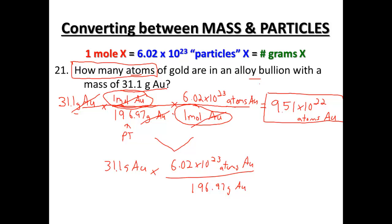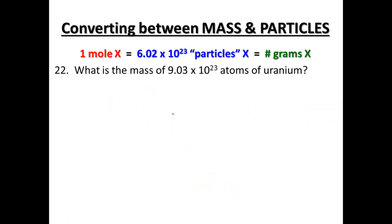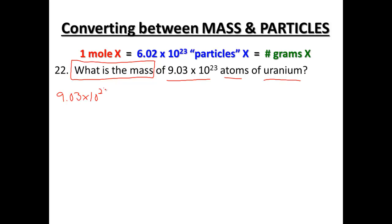Problems 22 and 23 are similar. Try those out, then pause and look at the answers to see if you're on the right track. For number 22: what is the mass of 9.0 times 10 to the 23rd atoms of uranium? Our first step is identifying what we're solving for — the mass. We start with 9.0 times 10 to the 23rd atoms of uranium.